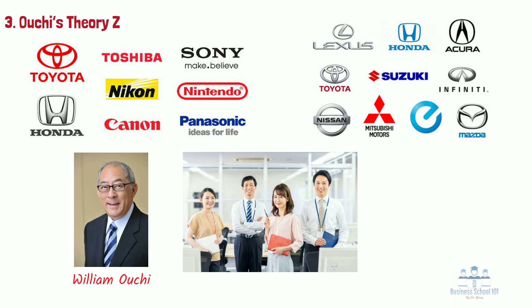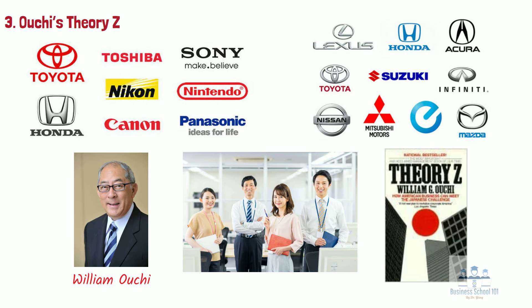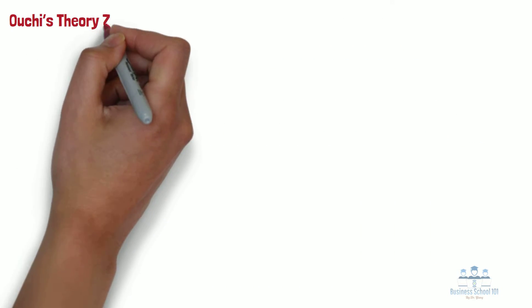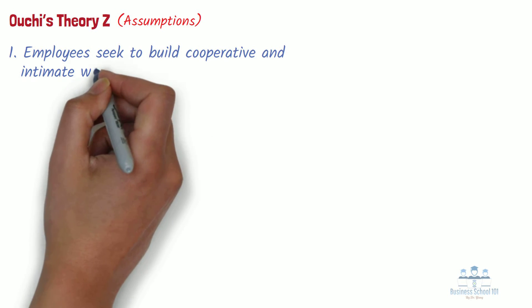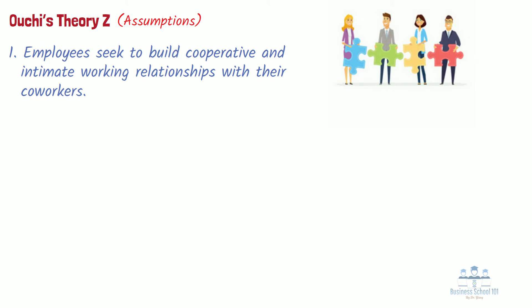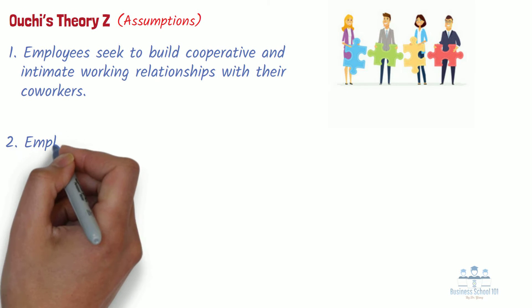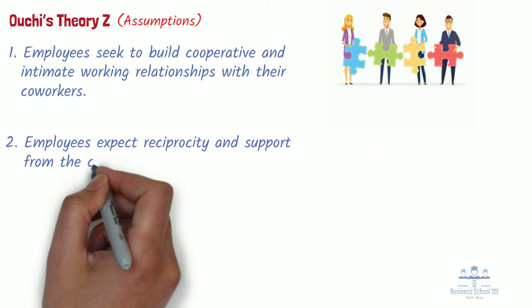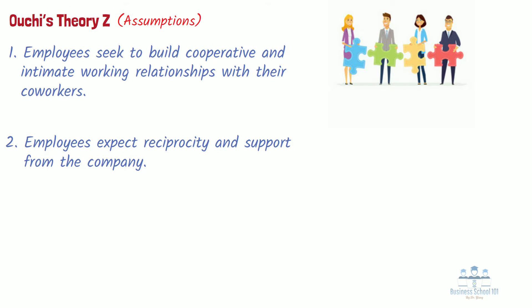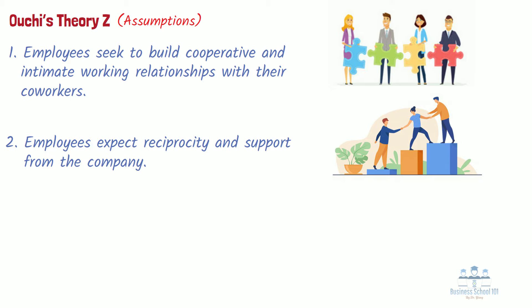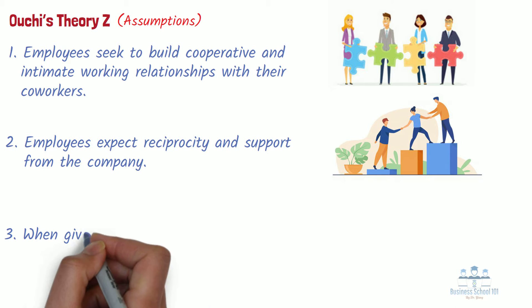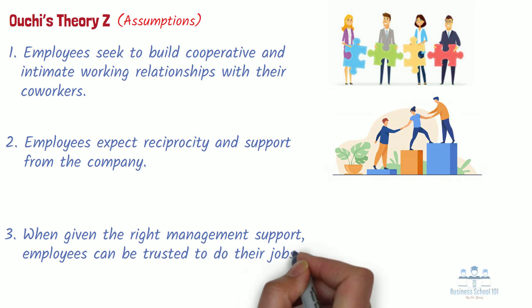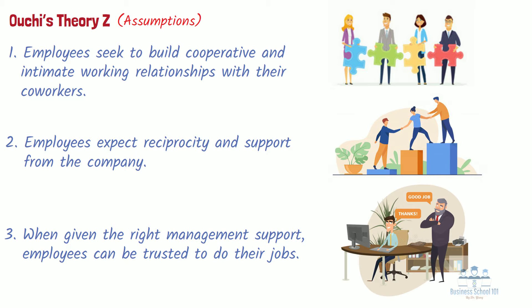Ouchi's theory first appeared in his 1981 book, Theory Z: How American Management Can Meet the Japanese Challenge. Generally, Professor Ouchi's Theory Z makes the following assumptions about workers. First, employees seek to build cooperative and intimate working relationships with their coworkers — in other words, employees have a strong desire for affiliation. Second, employees expect reciprocity and support from the company. People want to maintain a work-life balance and they value a working environment in which things like family, culture, and traditions are considered to be just as important as the work itself. Third, given the right management support, employees can be trusted to do their jobs to their utmost ability and look after their own and others' well-being.